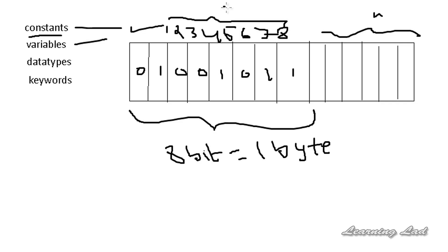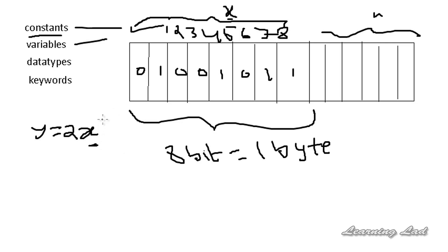For example, let's give a name called x to this byte. So this name given to a memory address, or the name given to the memory location, is called a variable. A variable is nothing but the name given to a memory location in order to access it easily. So when we create a variable in our program and refer to it — for example y = 2x — x will refer to whatever value is stored in that memory location referred to by the variable x.